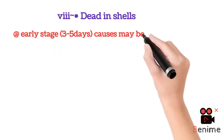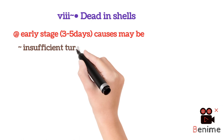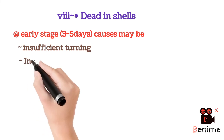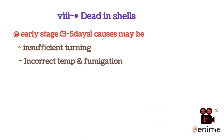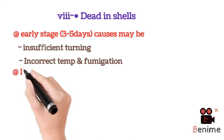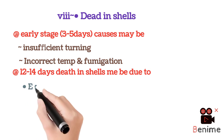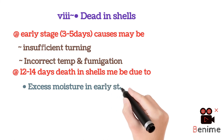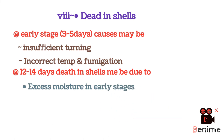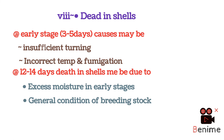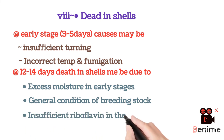The eighth cause is dead-in-shell. Sometimes embryos are found dead in shells for various reasons. If death of the embryo occurs at an early stage, around three to five days of incubation, causes may include insufficient turning of the eggs, incorrect temperature, or fumigation of the eggs or incubator. Death of embryos at 12 to 14 days of incubation may be due to excessive moisture in early stages and the general condition of the breeding stock.